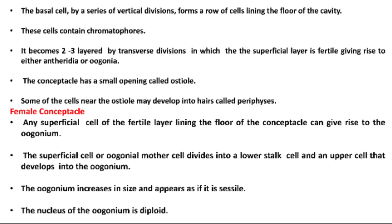The conceptacle has a small opening called the ostiole. Some of the cells near the ostiole may develop into hairs called periphyses. Any superficial cell of the fertile layer lining the floor of the female conceptacle can give rise to the oogonium. The superficial cell or oogonial mother cell divides into a lower stalk cell and an upper cell that develops into the oogonium.